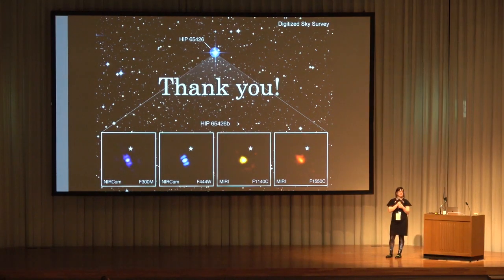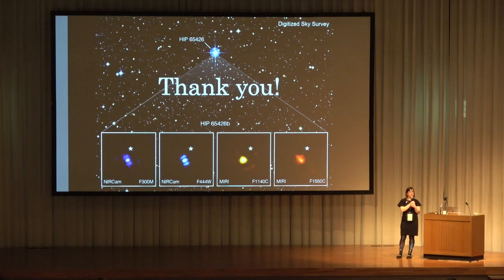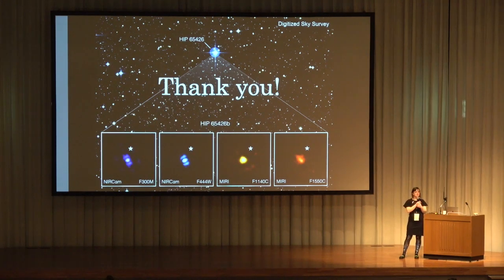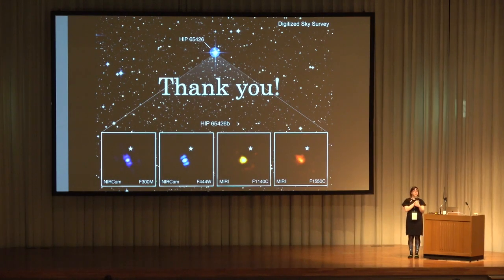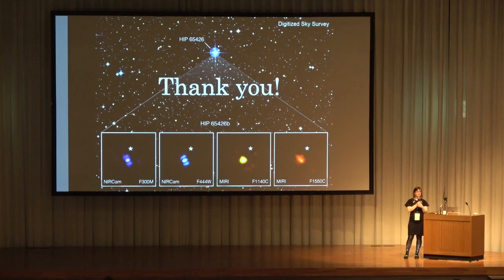Thank you Beth for a very nice talk. Gilles Chabrier, Lyon/Exeter: I would argue that most, if not all, of the objects you're calling exoplanets are actually brown dwarfs. The IAU definition has no physical basis — as we worked out with colleagues Rafikov and Janssen some ten years ago — the only way to distinguish a planet, meaning a heavy-element-enriched object, from a brown dwarf is by having gravitational moments. Science doesn't know yet.